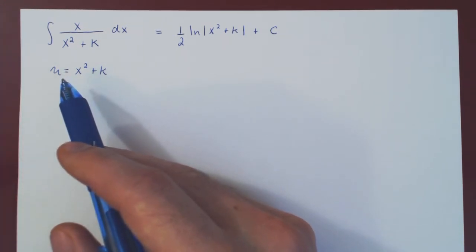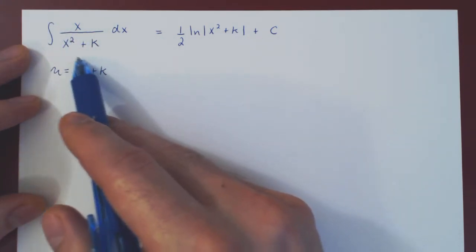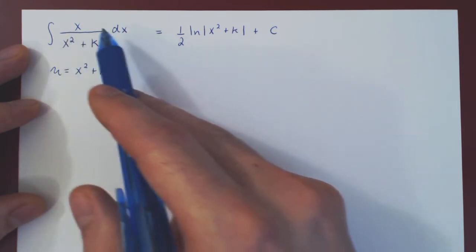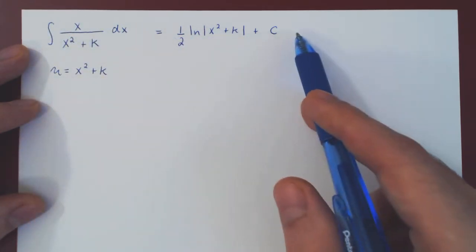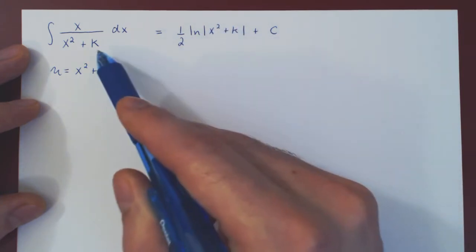So every time that you integrate a rational function using the method of partial fractions, if this integral comes up, you will no longer have to perform the u substitution, and you can jump directly from the integral to its final answer, being a half the ln in absolute value of the denominator,